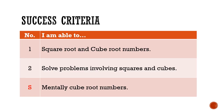The success criteria for today would be: first, for students to be able to find the square root and cube root of numbers; second, to solve problems involving squares and cubes; and a special success criteria — to be able to mentally cube root numbers in your head.